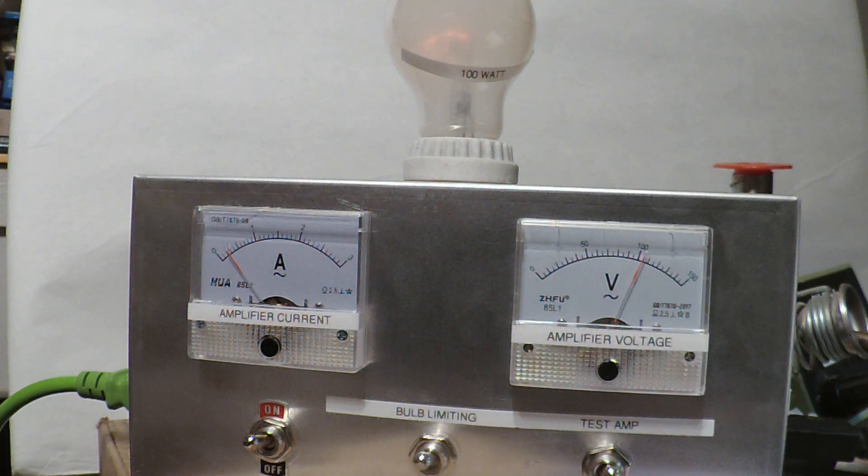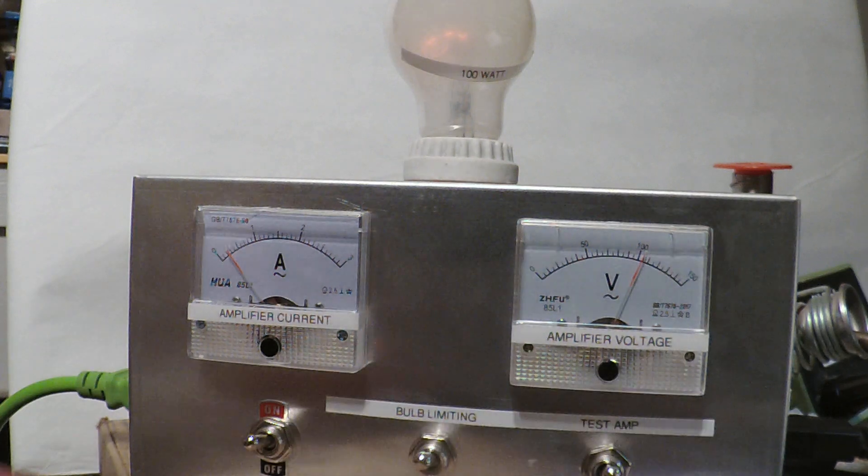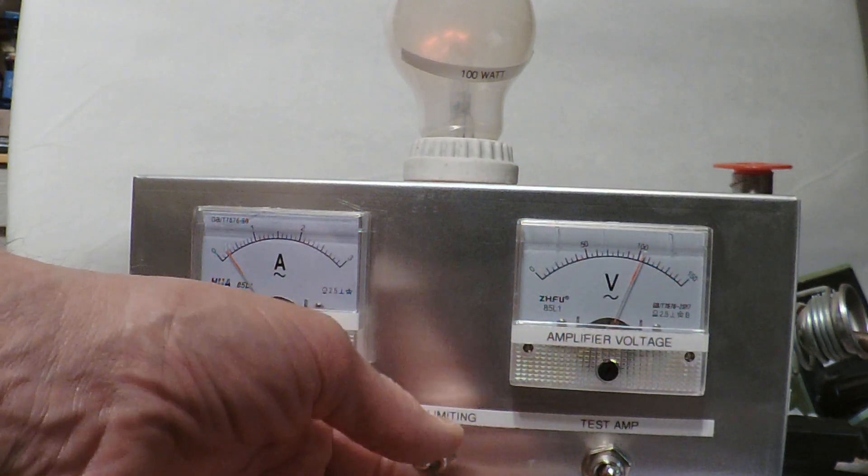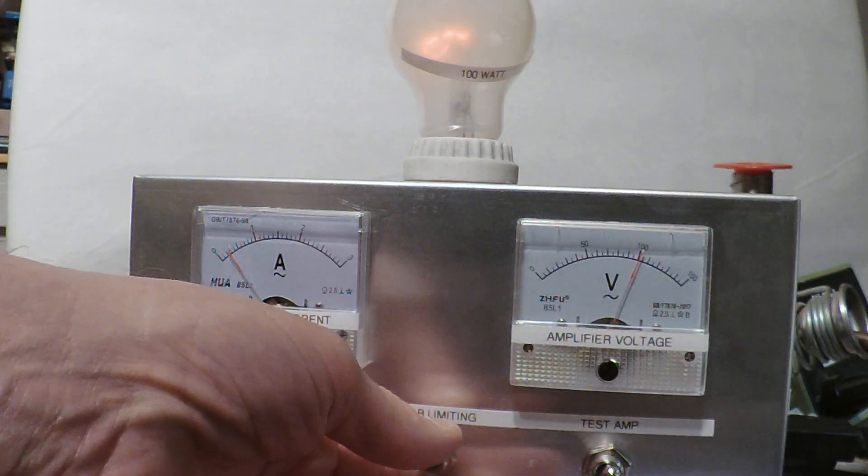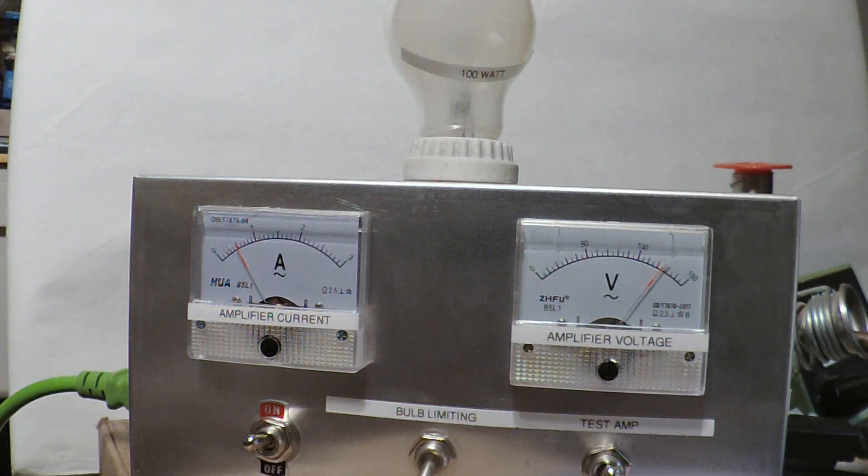Now I can go to a 200 watt bulb, but there's no point. I'm already over 100 volts. So I'll just go to direct, but you can see it. Light bulbs just barely glow. And now at direct, it just goes straight to the wall.